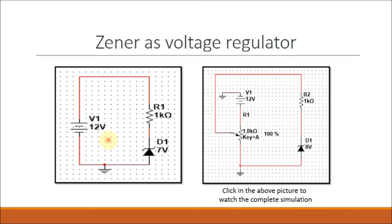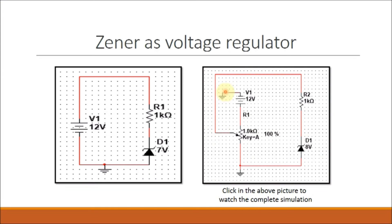The xenon diode is mostly used as a voltage regulator. If a voltage is applied to a series resistance with a xenon diode in reverse bias condition, the potential difference across the xenon diode will remain constant. For example, if a 12 volt battery is connected with a 1k resistor and a 7 volt xenon diode in series, the potential difference across the xenon diode will be 7 volts. If the source voltage is increased to 14 volts, the potential difference will still be 7 volts.